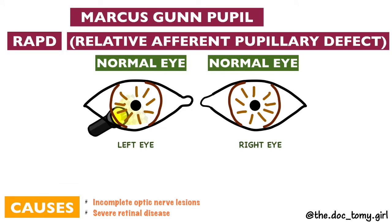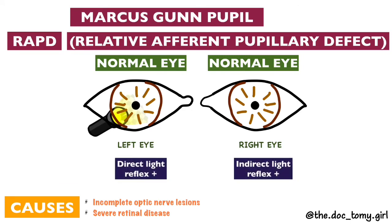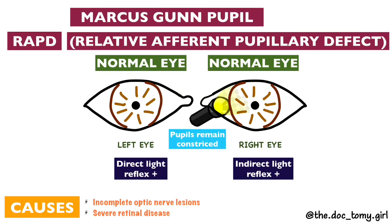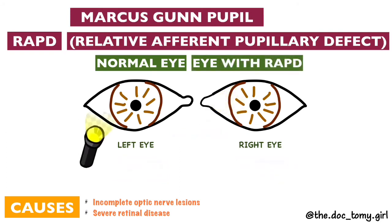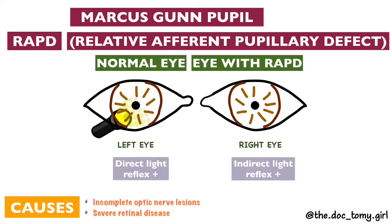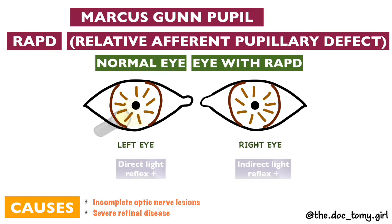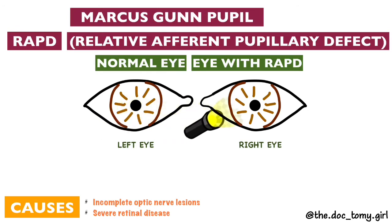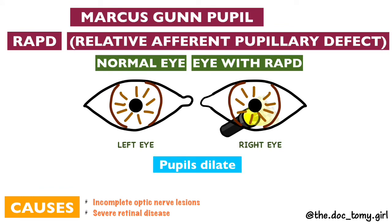In the swinging flashlight test, a bright flashlight is shown to one pupil and constriction is noted. Then the flashlight is quickly moved to the contralateral pupil and the response is noted. The swinging is repeated several times while observing the pupillary response. Normally, both pupils constrict equally and the pupil to which the light is transferred remains tightly constricted. In the presence of RAPD in one eye, when the light is shown to the normal eye both pupils constrict, but when the light is transferred to the abnormal eye, the affected pupil will dilate, because the affected side has less stimulation of the visual pathway.